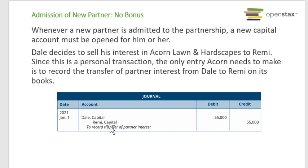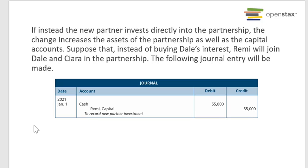This is an agreement between Dale and Remy. On the accounting side, we take the capital from Dale and give it to Remy — that clears out Dale and establishes Remy. If instead the new partner invests directly in the partnership, the change increases the assets as well as the capital accounts. Suppose Remy joins Dale and Sierra in the partnership — the journal entry would be: Cash $55,000, Remy Capital $55,000.